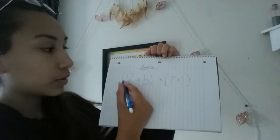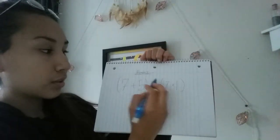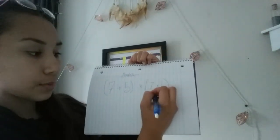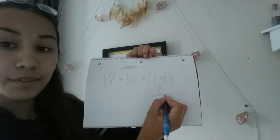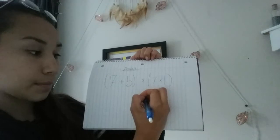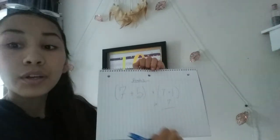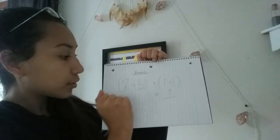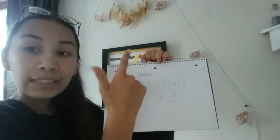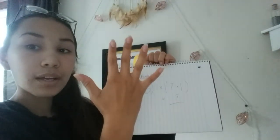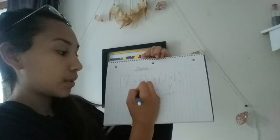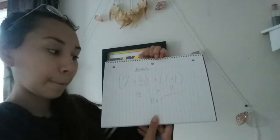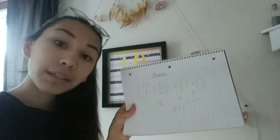So you do — this is addition, this is multiplication — you do multiplication before you do addition. So you do seven times one, which is seven. And then you have your times, and you have seven plus five — which if you can't do that in your head you can use your fingers and do seven, eight, nine, ten, eleven, twelve — which equals twelve.